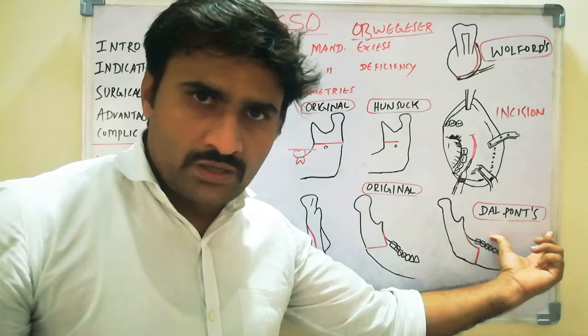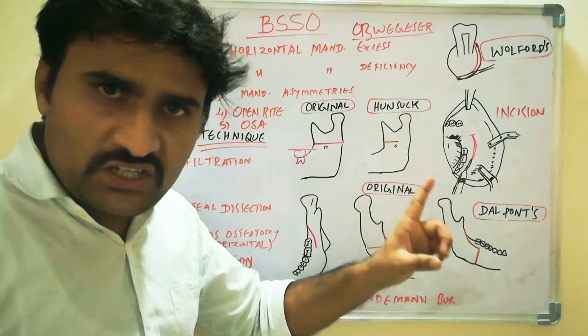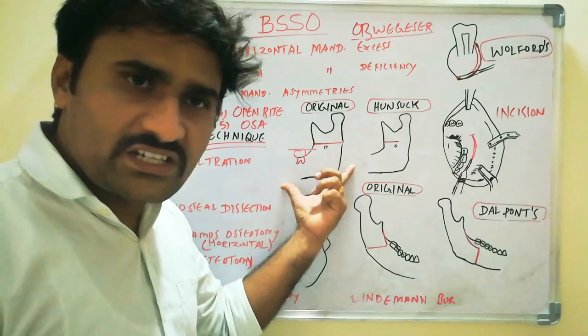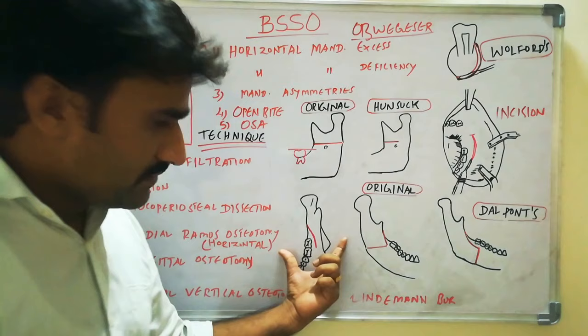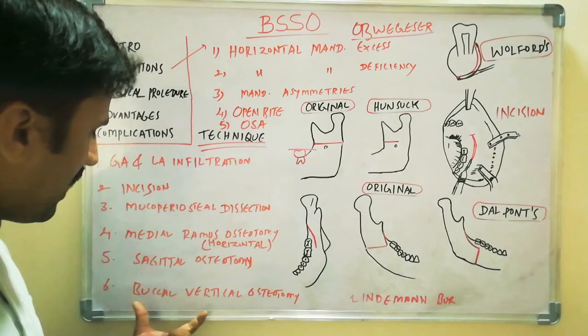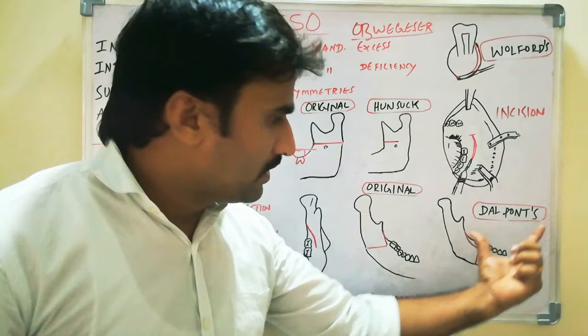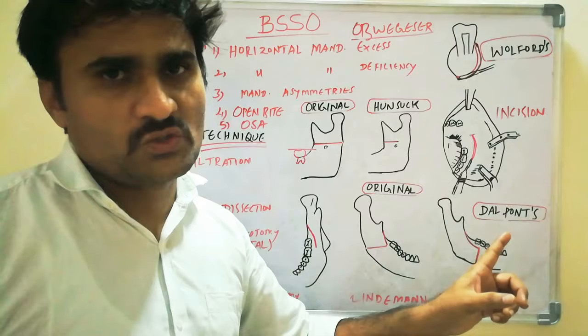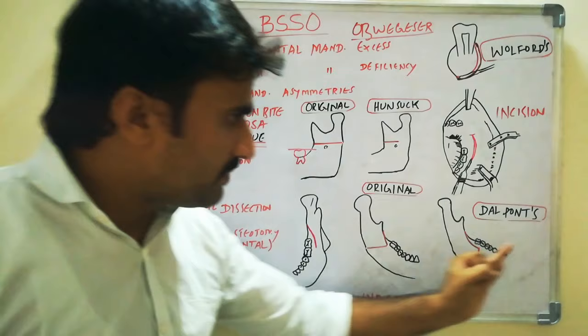To summarize the three osteotomies and their modifications: First, medial ramus osteotomy — originally extended to the posterior border, but Hunsuck modified it to extend just posterior to the lingula. Second, sagittal osteotomy — same as originally described, no modifications. Third, buccal vertical osteotomy — originally oblique to the antegonial notch, but modified by Dal Pont to be a vertical line between the first and second molar.